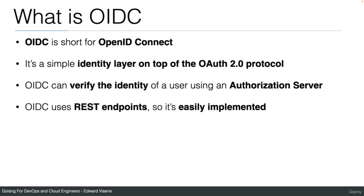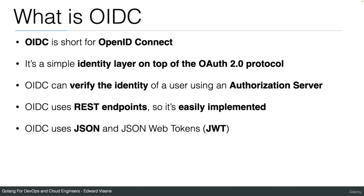OIDC uses REST endpoints instead of XML like SAML uses. It uses JSON and JSON Web Tokens (JWT). JSON Web Tokens are used in a lot of applications — we've used them already in one of our demos. OIDC also makes use of JWTs in the OIDC flow.